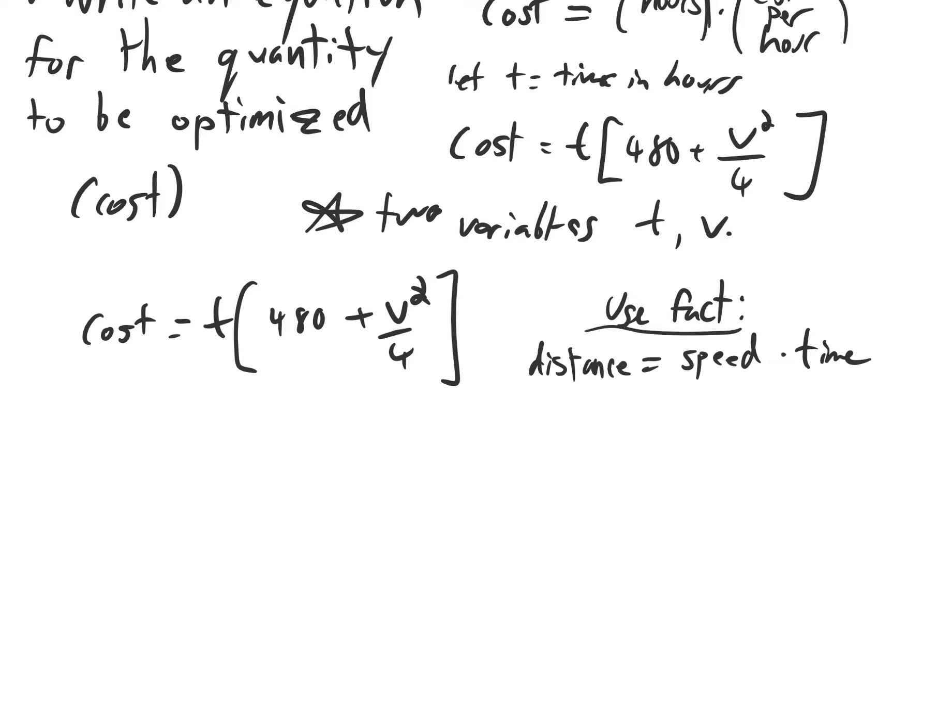We'll need to use this fact that distance equals speed times time and the distance that we're going to travel is 360 miles. That equals the speed times the time. We can solve for t and get t equals v over 360 or we can solve for v and get v equals 360 over t. These equations will allow us to substitute into our original equation to get it rewritten as a function of just one variable.